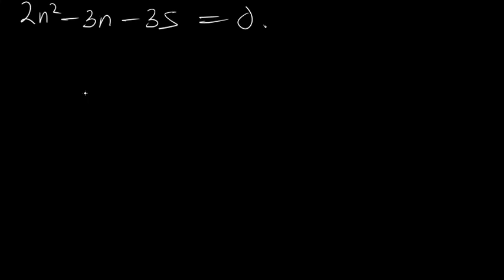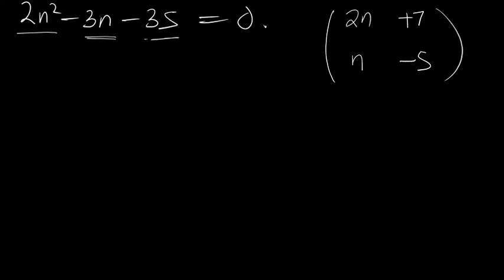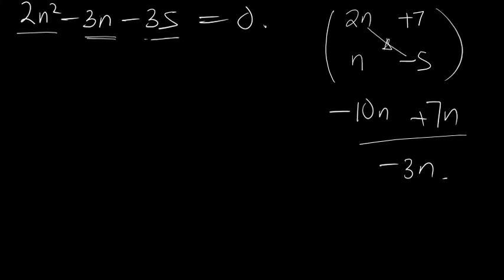To solve this equation, we need factors of 2n² that when multiplied and summed give −3n. The factors are 2n and n. For the constant we use +7 and −5, because 2n times −5 gives −10n, and n times +7 gives +7n, and when summed that gives −3n.